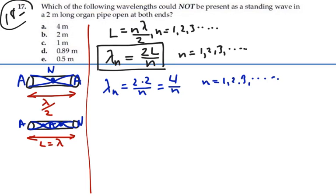So possibilities are that if n is equal to one, we have a wavelength equal to four. If n is equal to two, then we have two. Then we have one point three three. And if n is equal to four, we've got one.